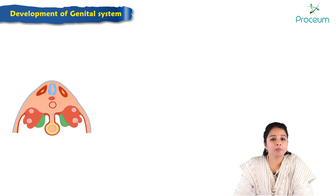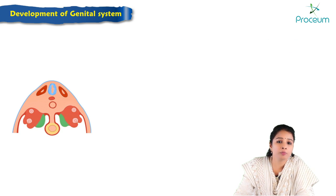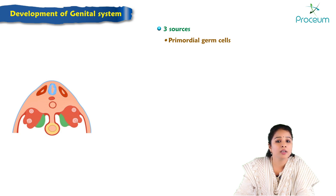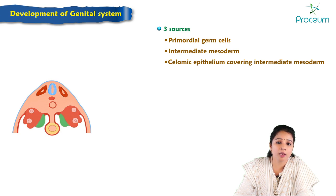The gonads develop from three sources: primordial germ cells, intermediate mesoderm, and the coelomic epithelium covering the intermediate mesoderm.